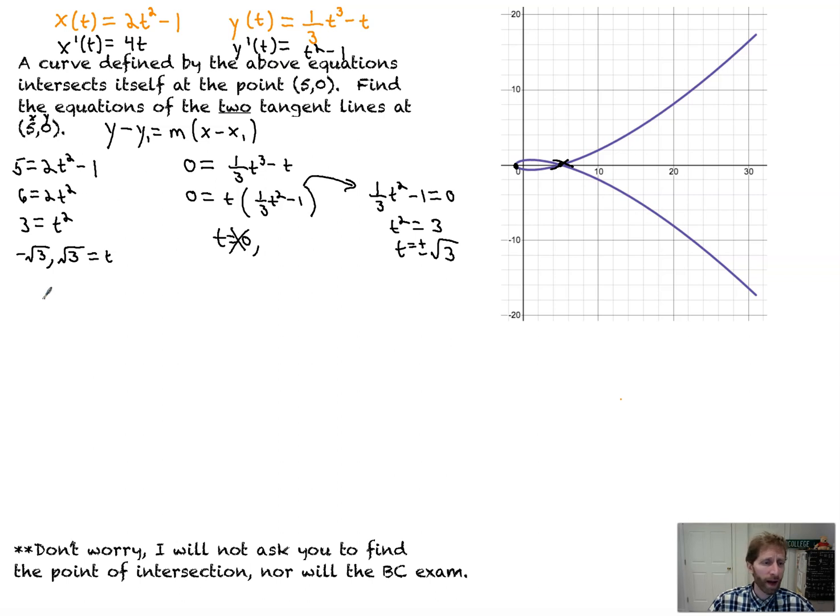So now we need the slope at each of these times. So I'm going to find dy/dx at t equals negative root 3. That's plugging in negative root 3 into each of these. Negative root 3 squared. This is y prime at negative root 3 minus 1, all over 4 times negative root 3.